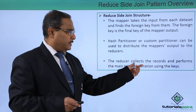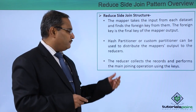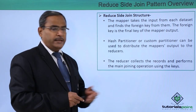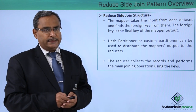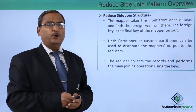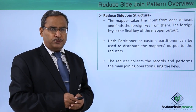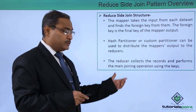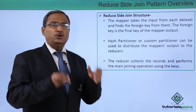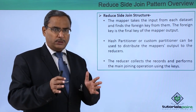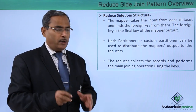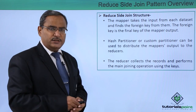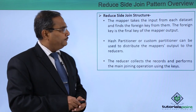The reducer collects the records and performs the main joining operation using the keys. The reducer produces the final output, and the reducer is actually responsible for doing the joining operation.